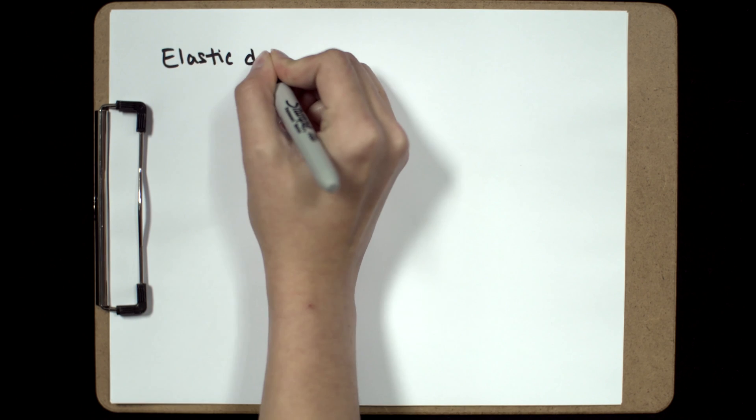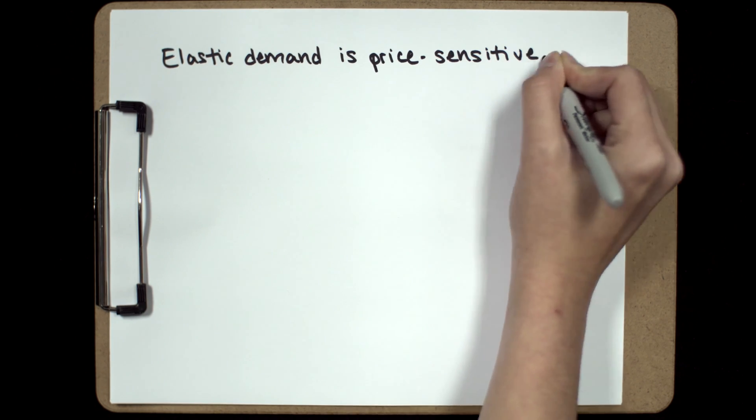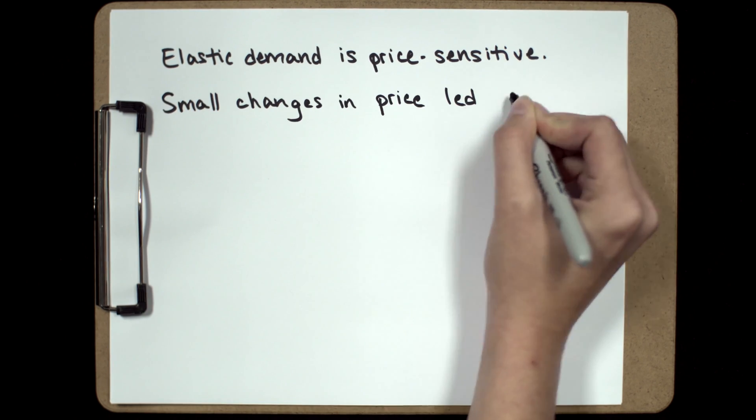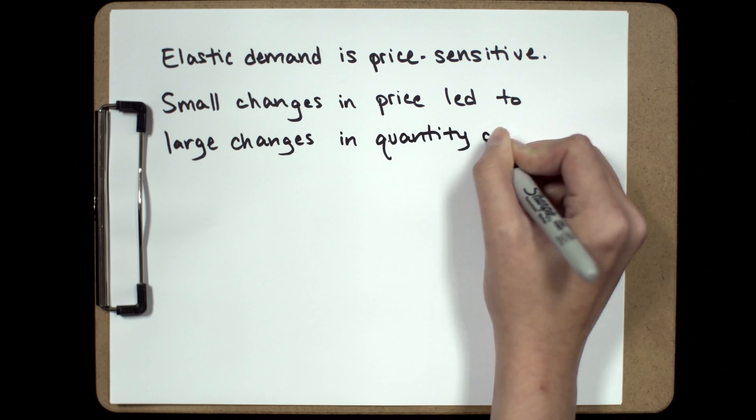Let's sum up. In both examples, elastic demand was very price sensitive. Small changes in price, up or down, led to large changes in demand.